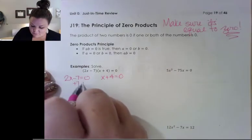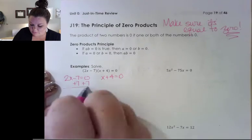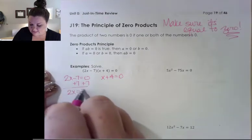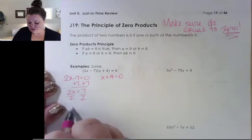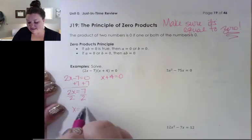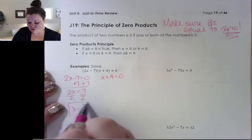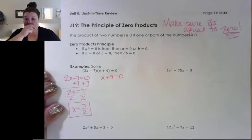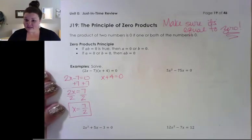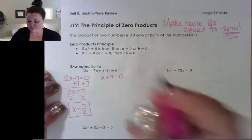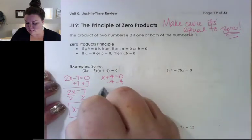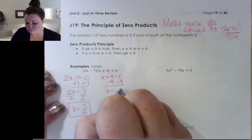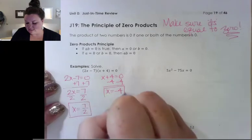On the first one, I'm going to move the seven over, which gives me 2x is equal to seven, and then I divide off my two. Be sure you just leave your answers as reduced fractions — my math lab does not like decimals on this one. And then to solve the second equation, I'm moving the 4 over, which gives me x equals negative 4.